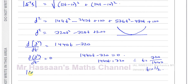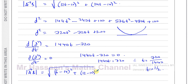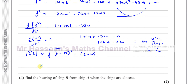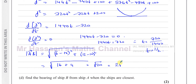To find the actual shortest distance, substitute T equals one half into the magnitude formula: square root of (12 times half minus 10)² plus (24 times half minus 10)². That gives the square root of (6 - 10)² plus (12 - 10)², which is the square root of (-4)² plus (2)², so the square root of 16 plus 4, which is the square root of 20 equals 2 root 5 kilometers.